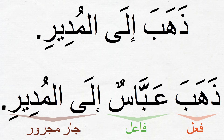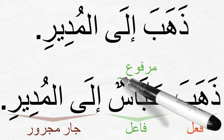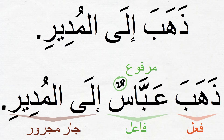Can you tell me what is the state of the ism Abbasun here? It is marfu'. That is because the fa'al of the jumlah fi'aliyya is always marfu'. This is one of the rules about verbal sentences that we should keep in mind. When we see a verbal sentence next time, the fa'al will always come as marfu'.